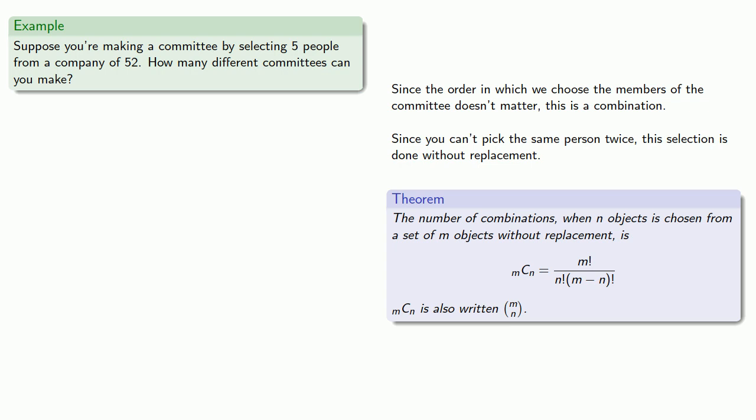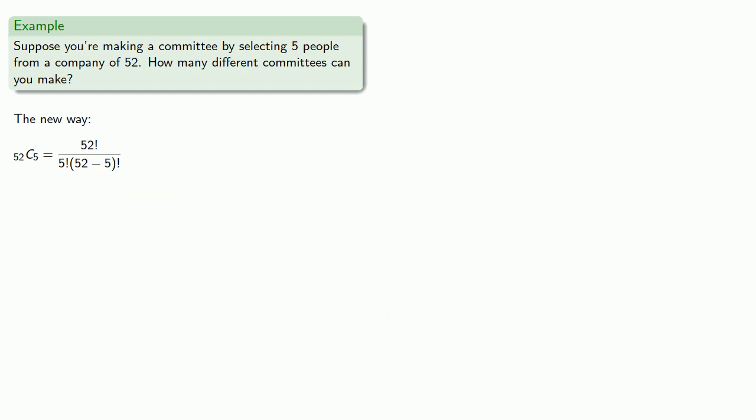And so the number of combinations when n objects is chosen from a set of m objects without replacement is given by the formula. And so we have 52 people we're choosing from, and we're going to select five of them. So we want 52 combined 5. That's 52 factorial divided by 5 factorial times 52 minus 5 factorial. That's 52 factorial divided by 5 factorial times 47 factorial.